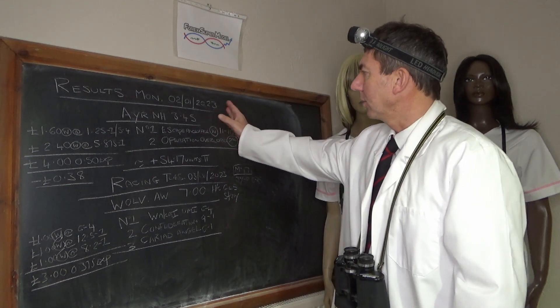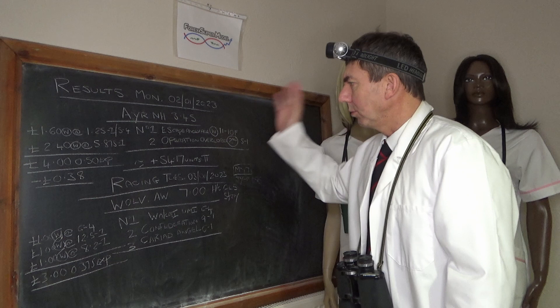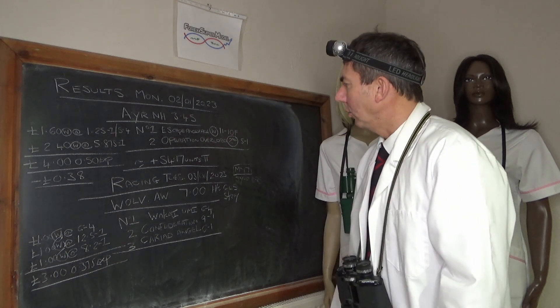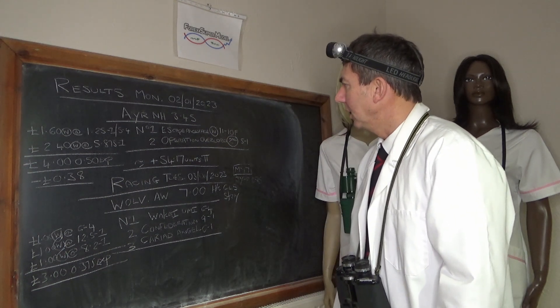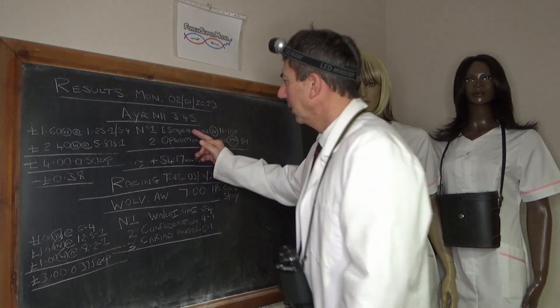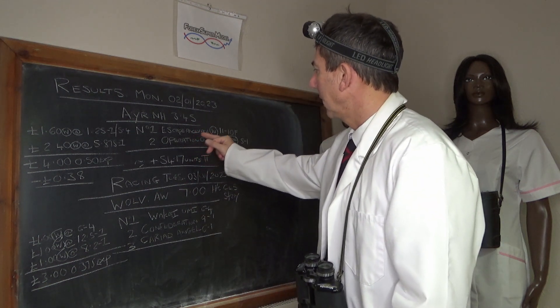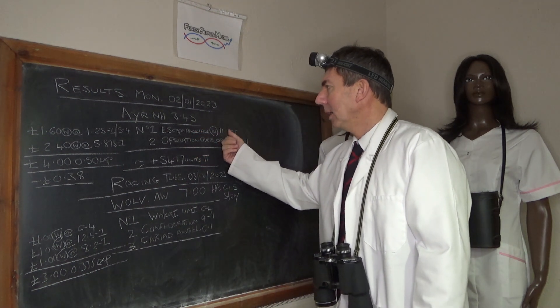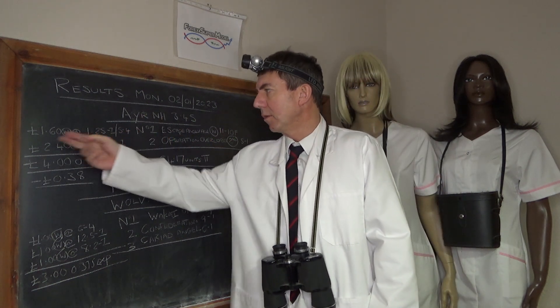Yesterday we were at Ayr on National Hunt 345. We had a go at two horses, we used one as a break-even hedge or near break-even hedge. Number one, Escape and Evade which won at 11 to 10, we got 5 to 4, 1.25 on it.